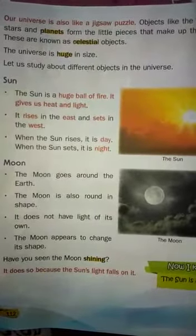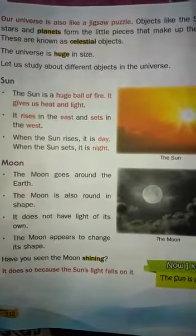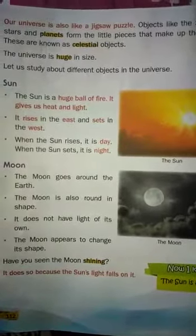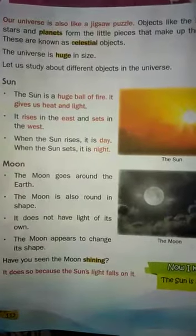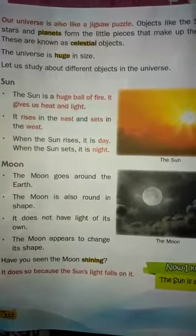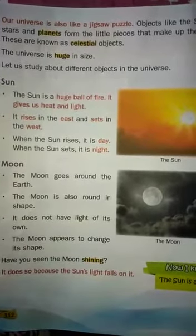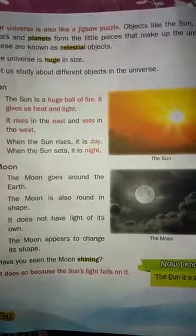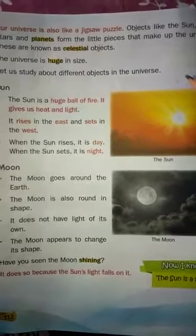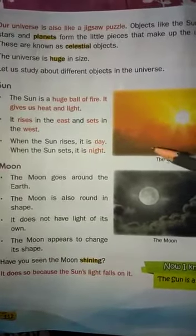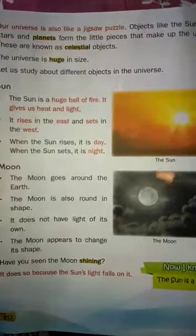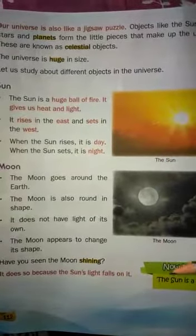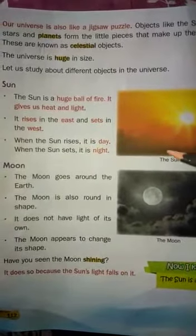The universe is huge in size — it's very big. Let us study about the different objects in the universe: sun, moon, stars, and planets. First one: sun.